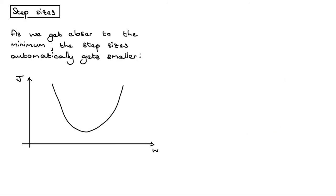One thing to note is that as you get closer to the minimum, your gradient is going to get smaller. The absolute value of your gradient decreases, so you naturally take smaller and smaller steps — you might start with a relatively big step and then progressively smaller ones — giving you a natural smoothing of the update as you approach the minimum.